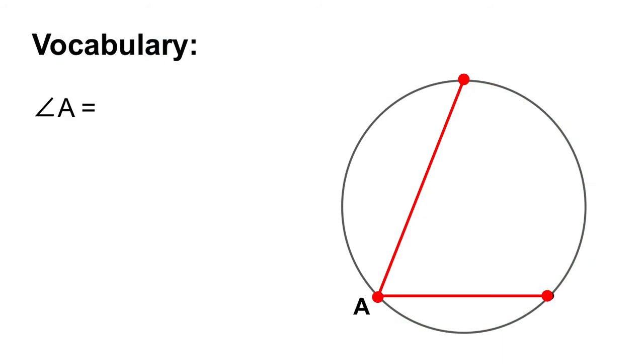Next on the list is a new vocabulary term. So this is another angle, but you can see this time A is not at the center of the circle. Instead, it's on the edge of the circle. So when that angle is on the edge of a circle, it's called an inscribed angle. There's a different relationship between inscribed angles and their arcs, and we're going to look at that now.